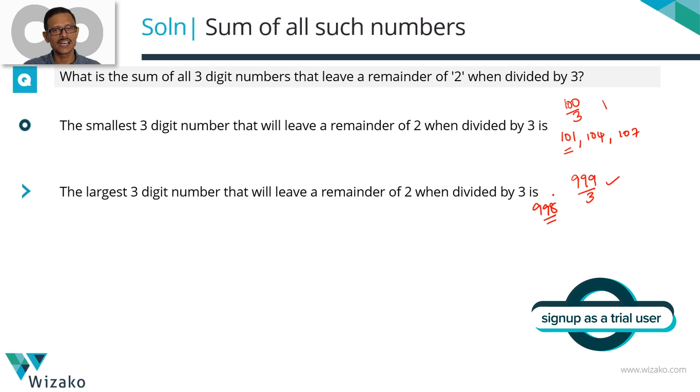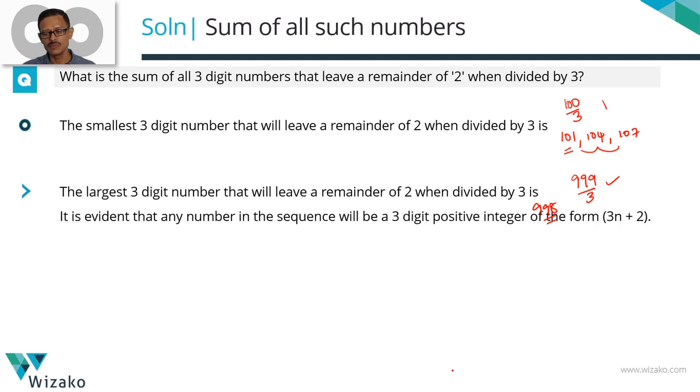So you've found the first number 101, the last number 998, and we know that these numbers have a difference of 3. These numbers are going to be of the form 3n plus 2. Let's look at it as multiple of 3 plus 2.